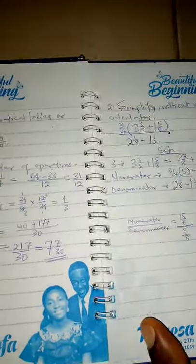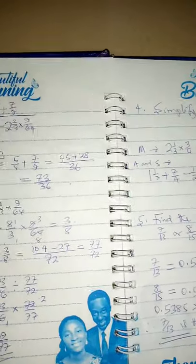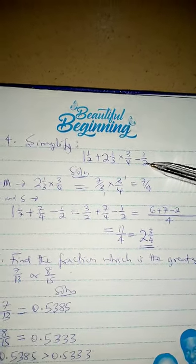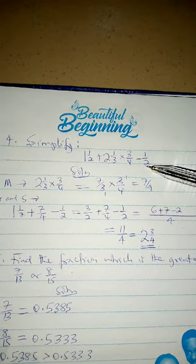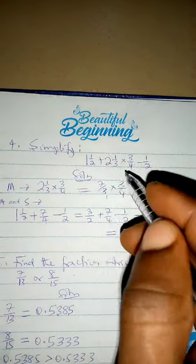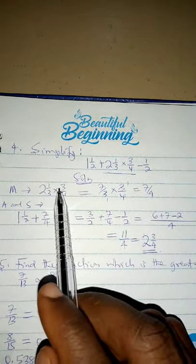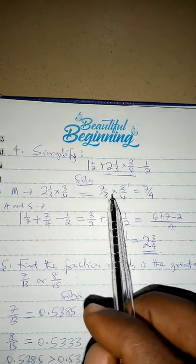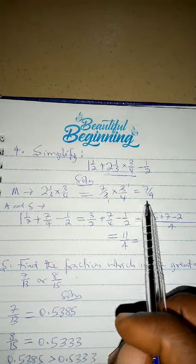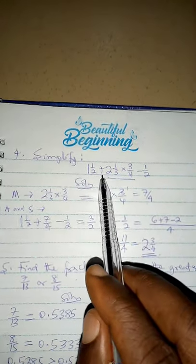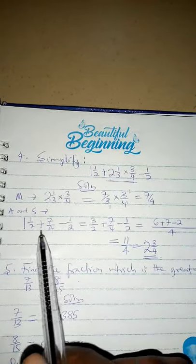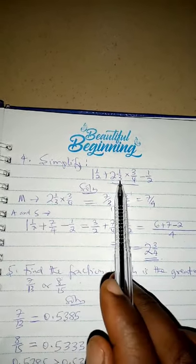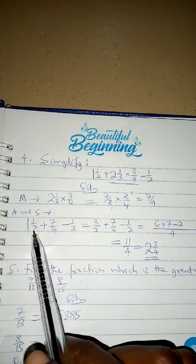Now simplify question three. Following the order of operations, the first operation to consider is the multiplication sign. Work on it: convert the mixed number to an improper fraction to get 7 over 3, times 3 over 4. The 3s cancel, leaving 7 over 4. Then for addition and subtraction, you can do them simultaneously — there will be no problem. This plus this gives 7 over 4.